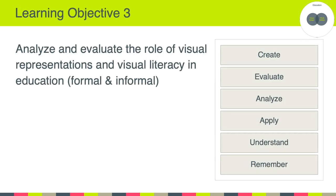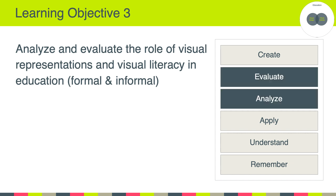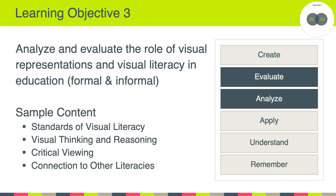This brings us to our third learning objective, which states that we're going to analyze and evaluate the role of visual representations and visual literacy in education — both formal and informal, and across settings. The relevant Bloom's taxonomy verbs are evaluate and analyze. In terms of content, we're going to look at standards of visual literacy, do some reading about visual thinking and reasoning, talk about critical perspectives and critical viewing, and make references to other types of literacies such as data literacy, information literacy, and multimedia literacy.